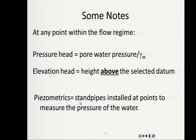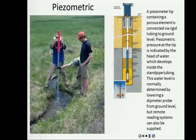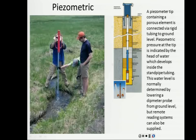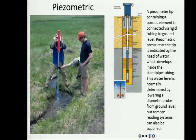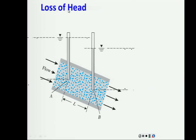Pressure can also be measured with piezometers — standpipes inserted to a point of interest with a porous tip. You read the column of water that rises internally in the pipe. The loss of head is defined as the difference, measured in units of length, of the energy or head between one point and another.